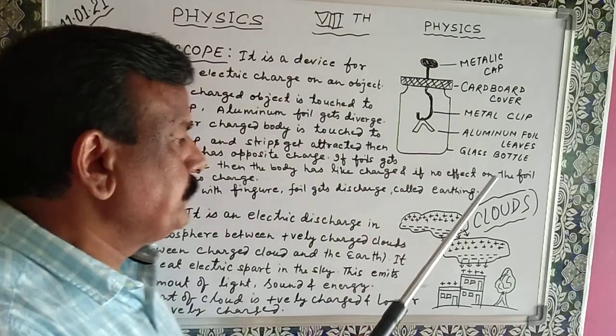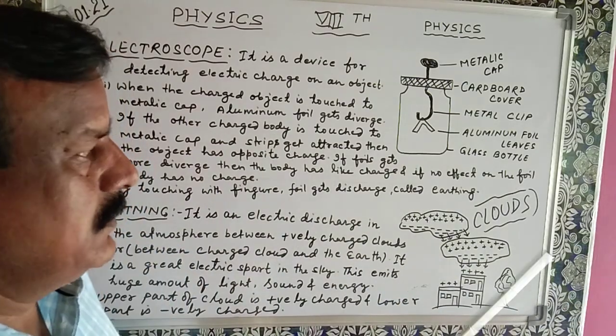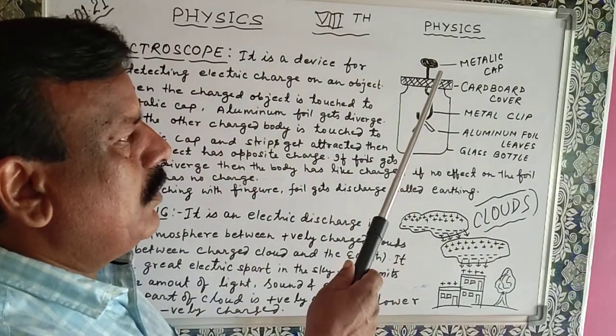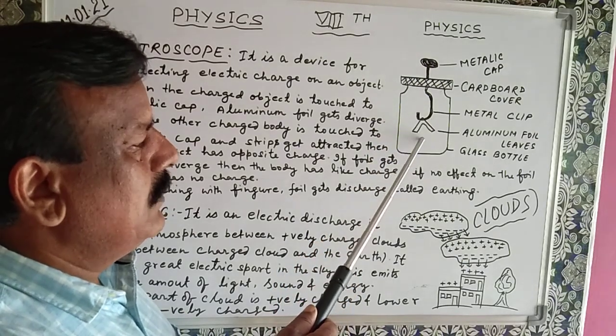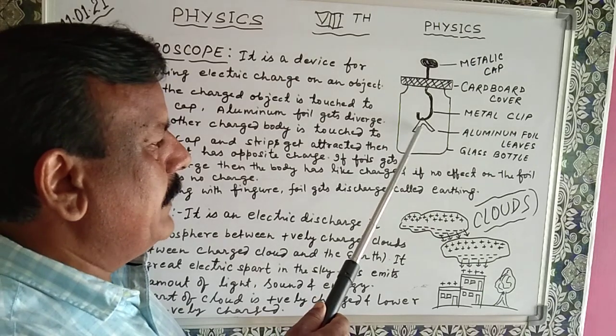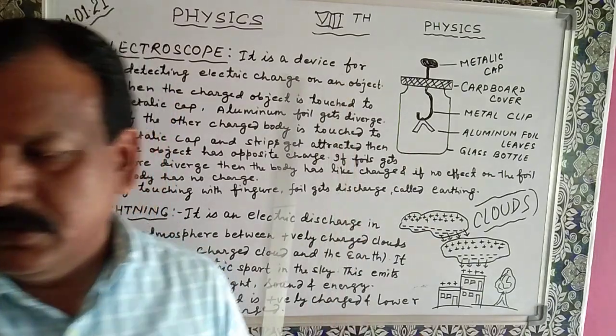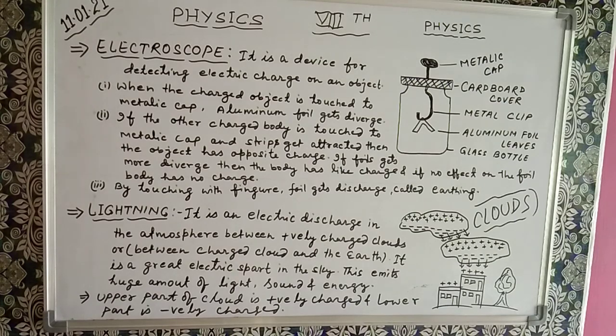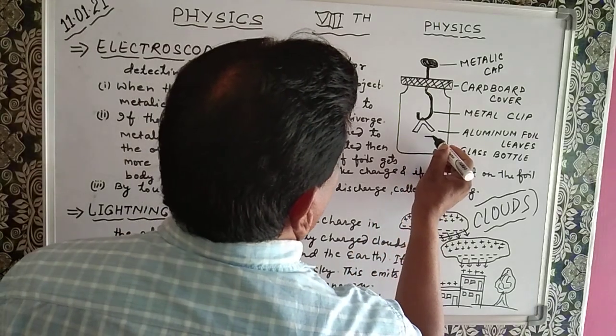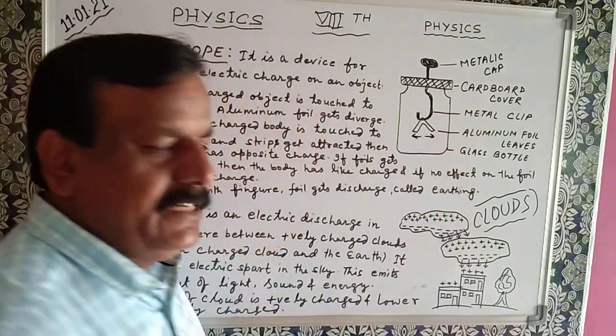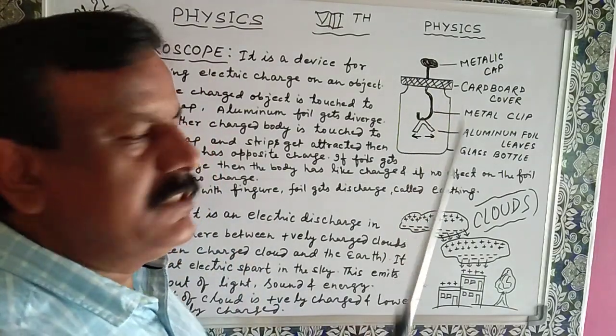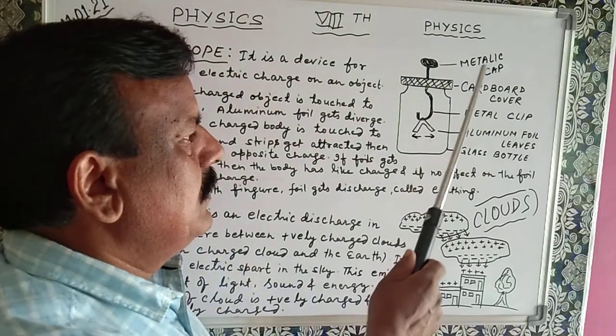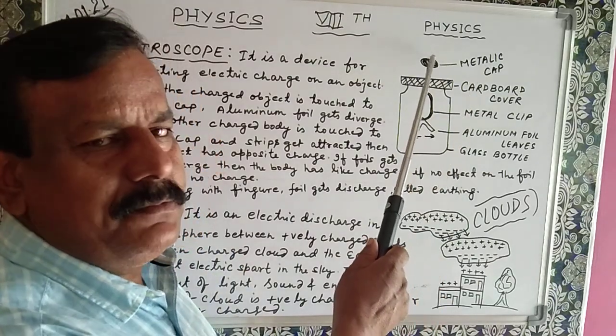When the charged body is brought and touches the metal cap, then that charge passes through metal clip to the aluminium foil and aluminium foil gets diverged. It gets separated because both are having same charge. And suppose the object we have taken has negative charge, then both the leaves have negative charge.